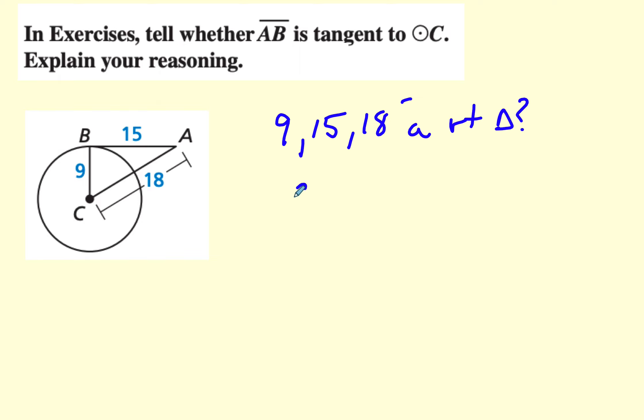So what I'll do is I'll write c squared, a squared plus b squared, and see if we have things that are equal to each other. 18 squared is 324. This is 81. And 15 squared is 225. We can clearly see this is not equal.